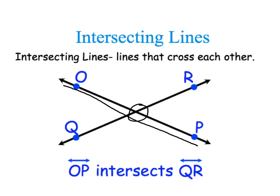Line QR. So these two lines are said to intersect and you would write it like this. Line OP intersects line QR.